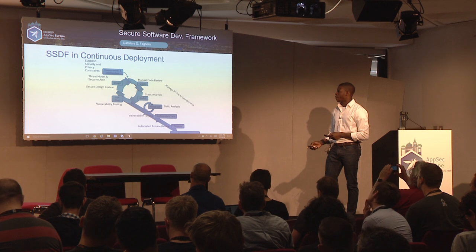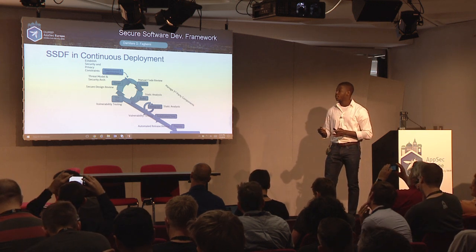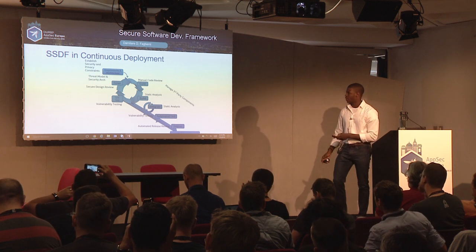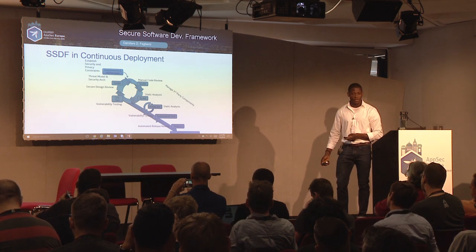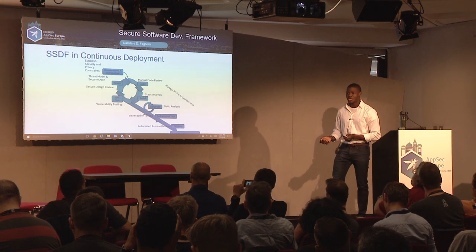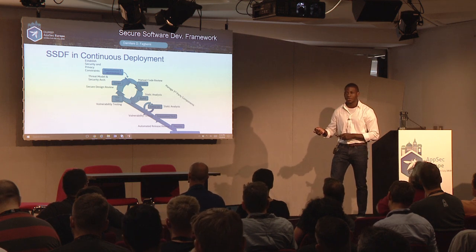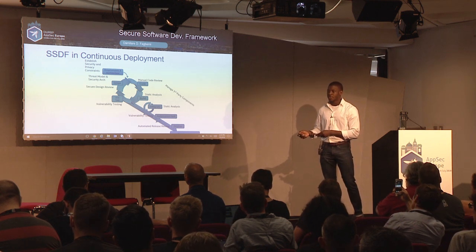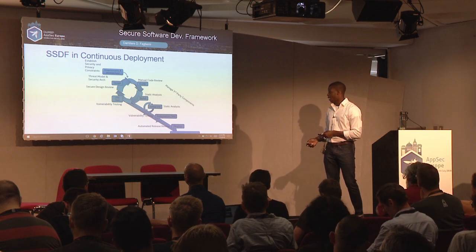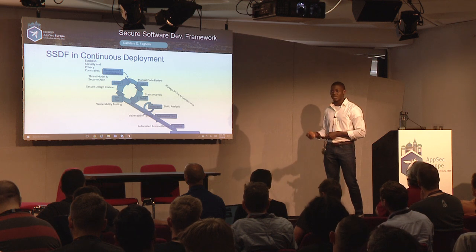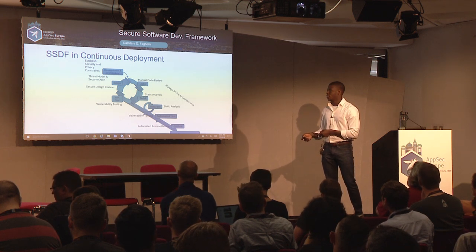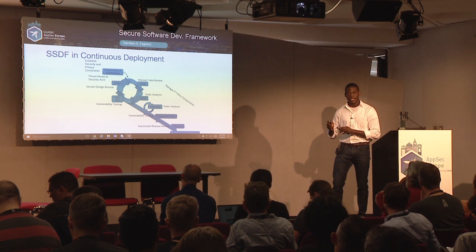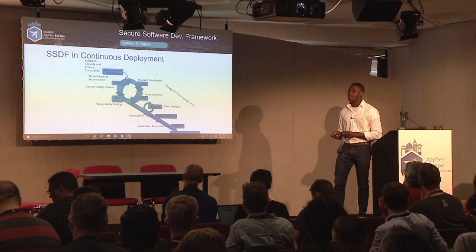Last but not least, we've got continuous deployment, which means we just want to be able to push things really fast to production. The interesting piece to call out here is that vulnerability testing should be automated - if one is trying to push a button and get code to production, you don't have time to begin to do manual vulnerability testing. So vulnerability testing, static analysis, and even pre-release review to evaluate the results of testing should be automated as well. You can see how this really lean set of basic activities maps to these various product development approaches.